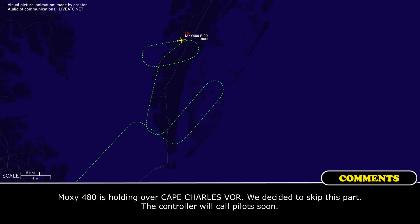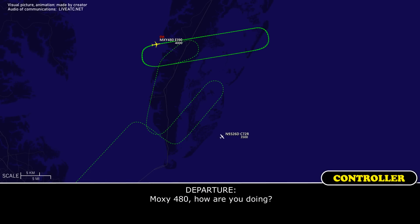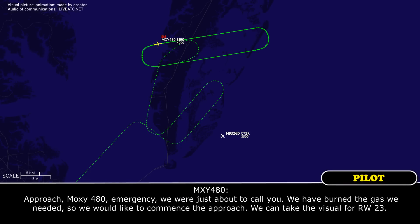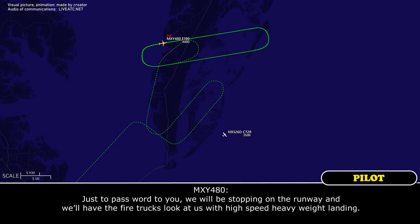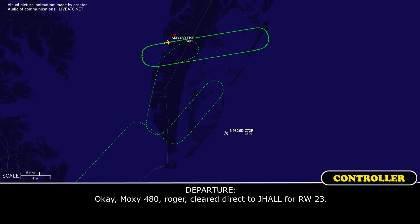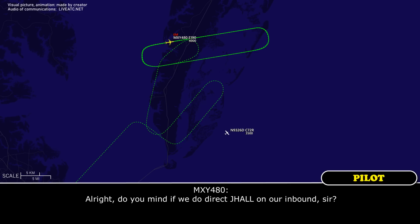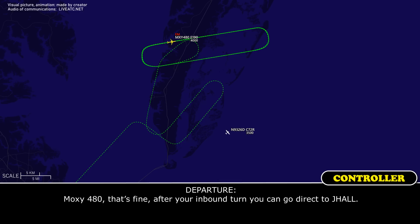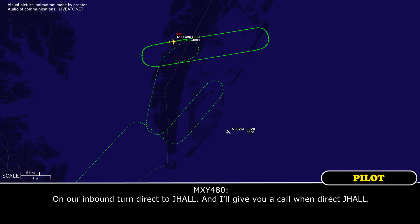MOCZ 480, how are we doing? Approach, MOCZ 480 emergency — we were just about to call you. We have burned the fuel we needed, so we would like to commence the approach. We can take the visual for runway 23. Just a heads-up: we will be stopping on the runway and will need a fire crew to meet us for a high-speed heavyweight landing. MOCZ 480, roger. Cleared direct to J-Hall for runway 23. Do you mind if we go direct J-Hall on our inbound turn? MOCZ 480, that is fine — after your inbound turn, go direct J-Hall. On the inbound turn, direct J-Hall, and we will call when direct J-Hall. Thank you.